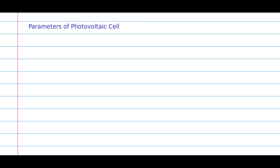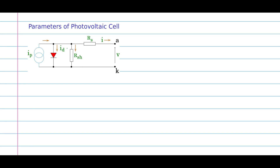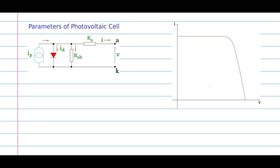In this clip, let us discuss the parameters of the photovoltaic cell. For this, let us have the model of the PV cell. This is the equivalent circuit model of the PV cell. We have the Ip the photocurrent, the diode part, the shunt non-ideality, and the series non-ideality coming here, and these are the terminal voltages and currents of the PV cell.